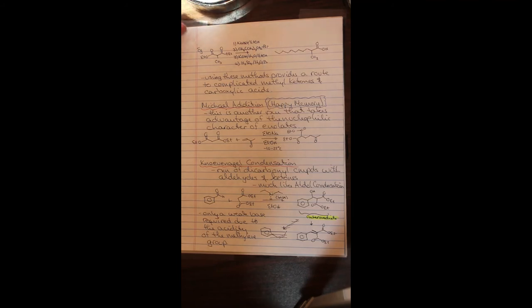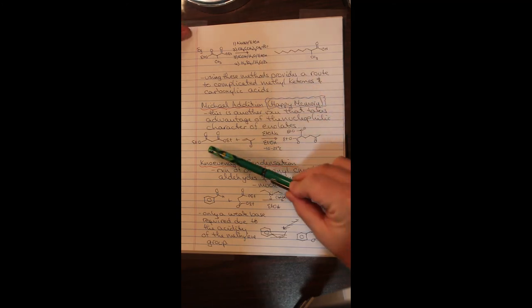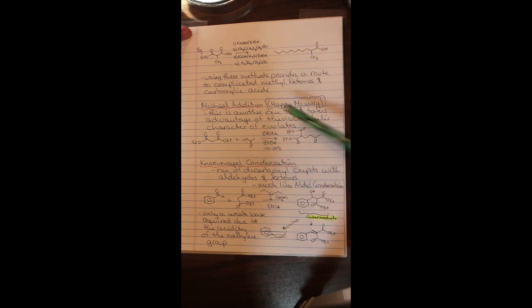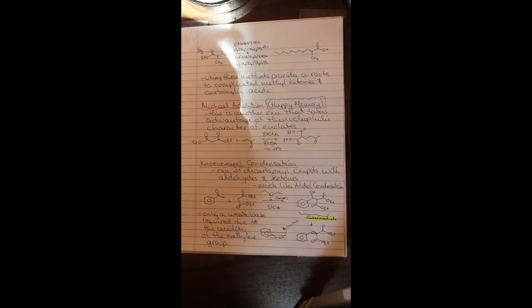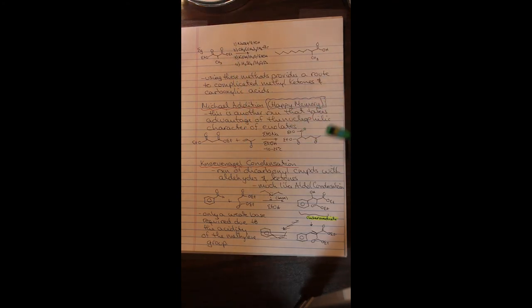Next we're going to take our beta dicarbonyl systems and treat them with alpha beta unsaturated carbonyl groups. This reaction is still called the Michael addition, so a happy memory for all of us. This is another reaction that takes advantage of the nucleophilic character of enolates. So we generate the enolate here. It attacks the beta position of this alpha beta unsaturated carbonyl group, and we generate an intermediate that looks like this. So we have a species now that has a lot of functional groups on it that we can continue to modify. So this becomes a way of coupling together different things and generating a more complex system.